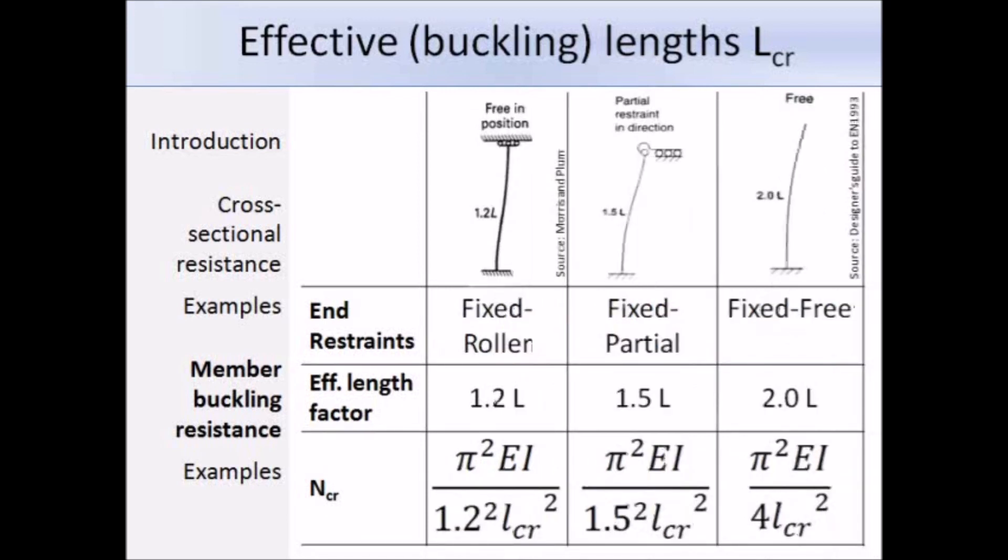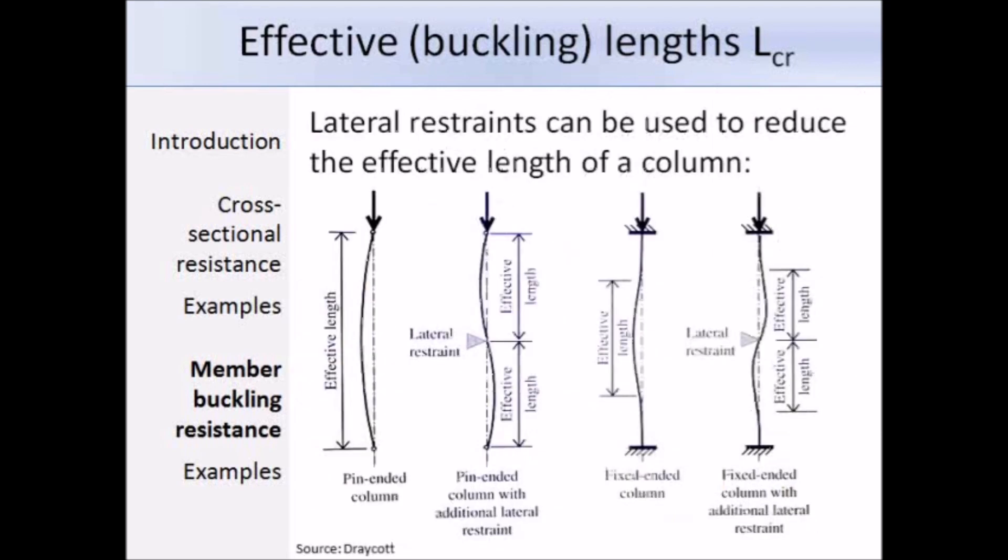Here are some more examples of end conditions and their effective length factors. You can reduce the effective length of a column by introducing lateral restraints, which in turn will increase the design compression resistance. You can see in the diagram that by introducing a lateral restraint at the centers of both columns, the effective length has been reduced significantly.